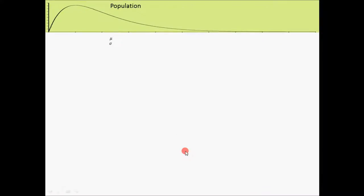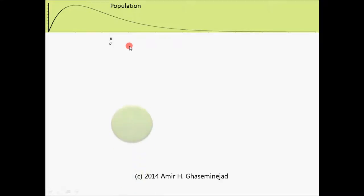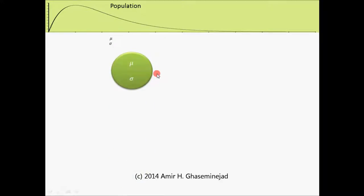Let's assume that we have a population with a mean of mu and a standard deviation of sigma, and we want to take samples of size n from this population. Let us assume that n is a relatively big number, so we are taking big samples from that population.